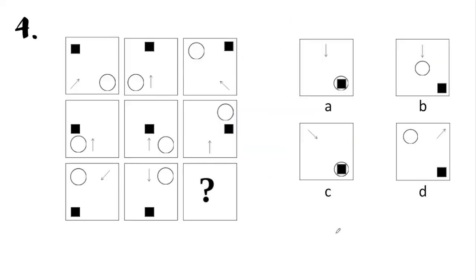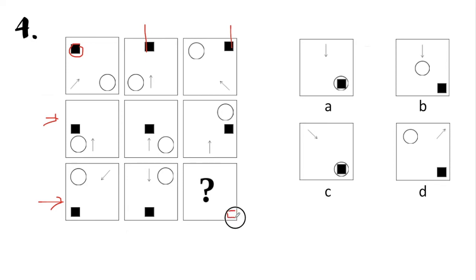Now we go to item number four, which looks a little bit confusing. We are given several squares, and inside each square we see three symbols. The first symbol to look at is the shaded square. In the first row, the shaded square is on the upper left corner, then middle, then upper right. In the next row, the shaded square is in the middle left corner, then center, then middle right. In the last row, the square is in the lower left corner, then middle — so it should be in the lower right corner.